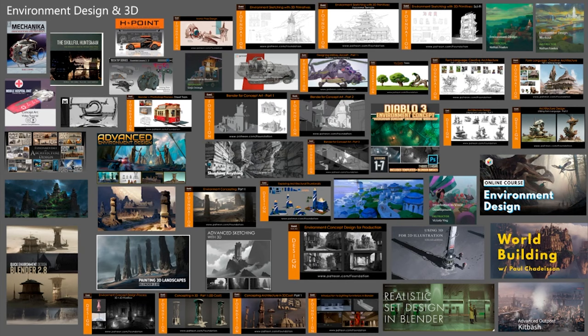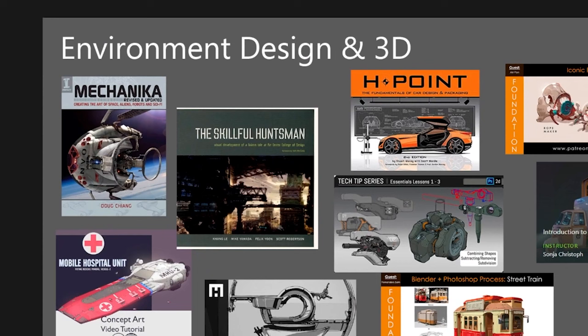So let's jump right in. Here you can see two interesting books: Mechanica by Doug Cheng. Doug Cheng nowadays is one of the head people in the Star Wars franchise — the creative director, production designer — he has a lot of roles overseeing different projects on different platforms. And also Skillful Huntsman — it's a very well-known book I've talked about other times here on the channel. It goes in depth into the process of creating a world through stories, using one story and really building on top of that. This was a discipline at the Art Center College of Design and it's really well documented in this book.